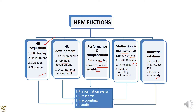Last but not least are industrial relations — grievance handling, disciplinary measures, and dispute management. These five areas — HR acquisition, HR development, performance and compensation, motivation and maintenance, and human resources and relations — give us data for HRIS, or human resource information system. They also help with research, accounting for recruitment and selection costs, benefits, salary disbursement, and auditing.